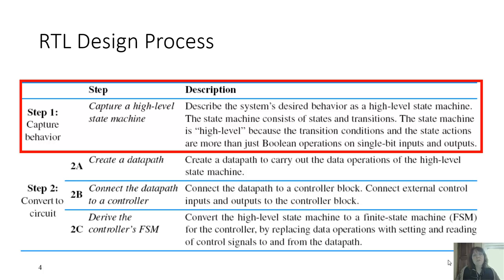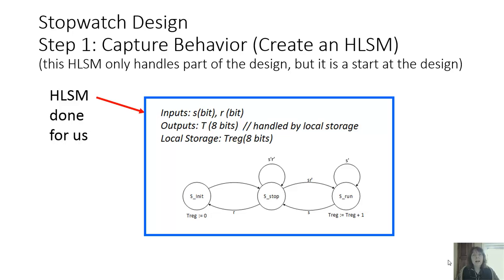Step one should be to capture a high-level state machine. That was given to us in the lab manual. We see that we have our high-level state machine defined as three states: SINIT, SSTOP, and SRUN. Our inputs are S and R, which are each a single bit wide, and our output is T, which is eight bits wide.